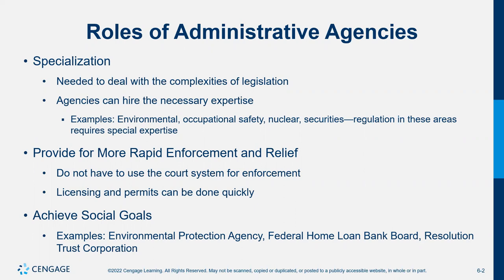Administrative agencies fill the role of specialization — helping the executive branch enforce laws in specialized areas — which provides for more rapid enforcement. Sometimes they exist to achieve social goals, like the Environmental Protection Agency or the Federal Home Loan Bank Board, which helps more people afford to buy a house by opening up bank lending to a broader group.